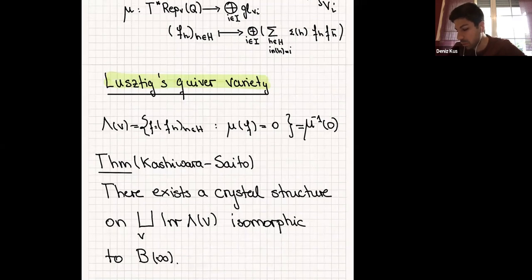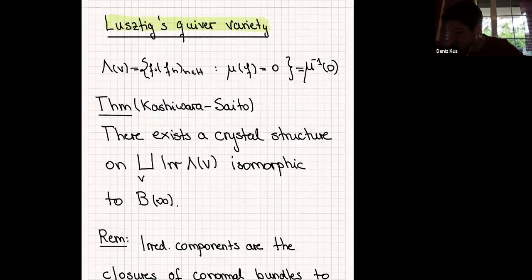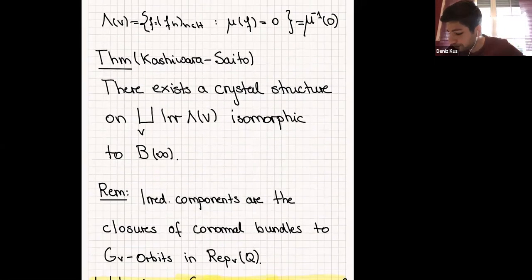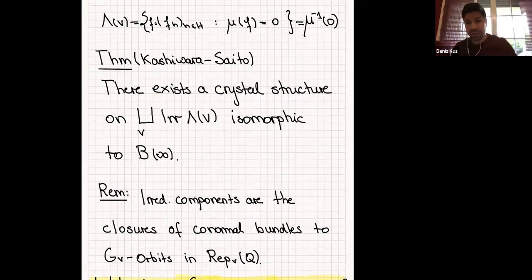The crystal actions are not explicitly described — they construct certain bijective maps and say one irreducible component is mapped to another, but cannot say explicitly what that is. The irreducible components are closures of conormal bundles to G_V orbits. Two representations of your quiver are isomorphic if and only if they are in the same G_V orbit. So G_V orbits give isoclasses, and you can index the irreducible components by isomorphism classes of your original quiver.